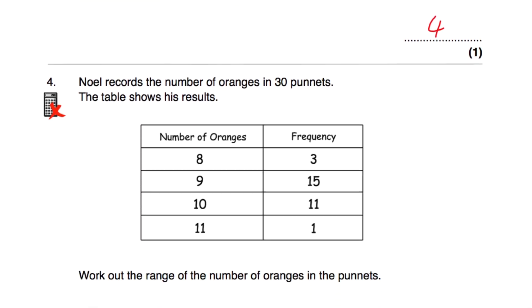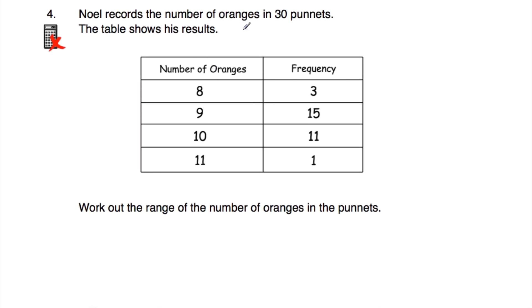Question number four. Noel records the number of oranges in 30 punnets. In three punnets he had eight oranges, in 15 punnets nine oranges, in 11 punnets ten oranges, and in one punnet eleven oranges. The question says, work out the range. To calculate the range, take the highest number and subtract the lowest number. The greatest number of oranges was 11 and the lowest was 8. So 11 subtract 8 equals 3. The range is 3.